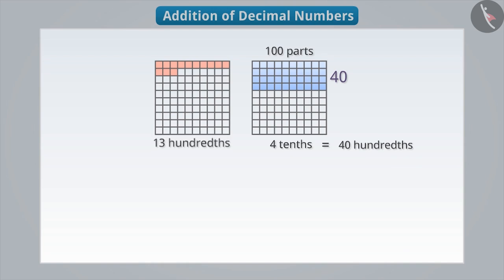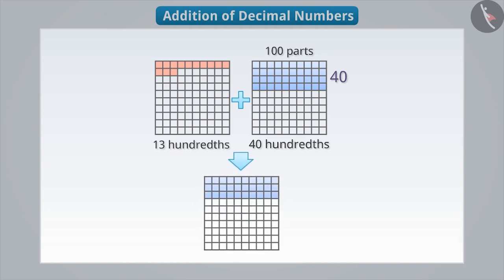Now we have 13 hundredths and 40 hundredths. So what will their sum be? If we place the shaded parts of both squares in one square, then we can say that there are 53 shaded parts out of 100. Which means that the sum of 13 hundredths and 40 hundredths is 53 hundredths.